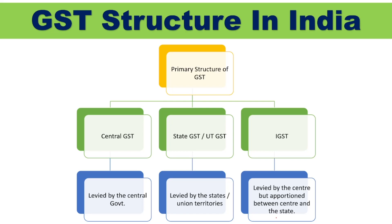The GST tax structure is classified into three types. The first one is Central GST, that is CGST. The second one is State GST, which is SGST, or UTGST — Union Territories GST. The third one is IGST, that is Integrated Goods and Services Tax. These are the three types forming the primary structure of GST.